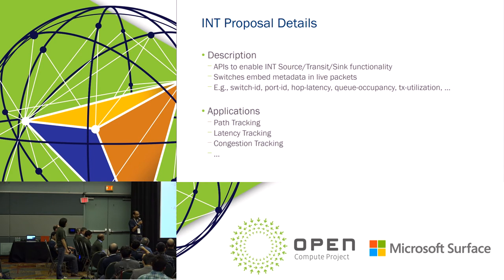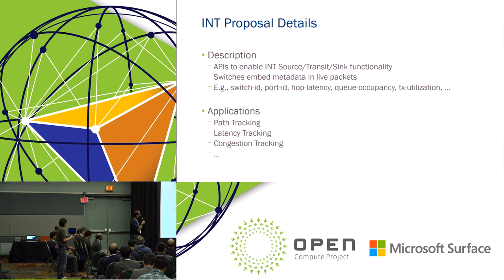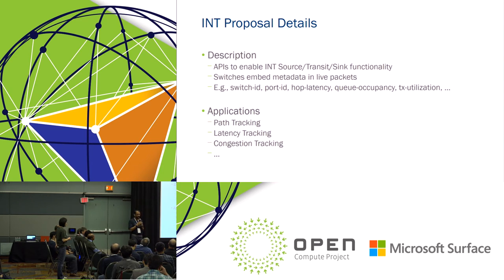The INT proposal for SAI is basically a set of APIs to enable source, sink, and transit functionality for INT, and gives you options to pick embedded metadata to insert into packets — that's extensible. Examples include switch ID, latency, queue occupancy, timestamps, and more. Applications include tracking the full path of a packet in real time, measuring hop-by-hop latency, and congestion tracking. It allows you to see what's happening in the network in real time and get full visibility. We are excited to bring this proposal to the community and look forward to your comments.